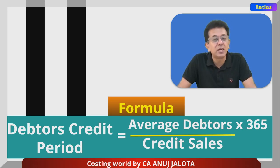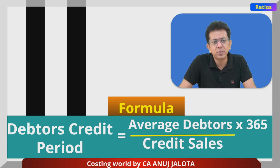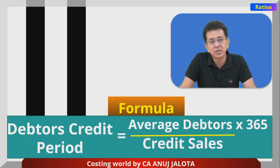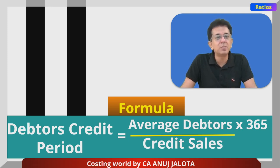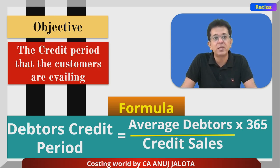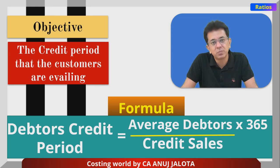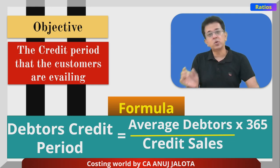The formula in this case — debtors credit period or average collection period — we collect the money from the debtors. It's nothing but average debtors upon credit sales into 365. The main aim is to find out in how much period we are getting the money from our customers, or how much credit period the customers are availing.